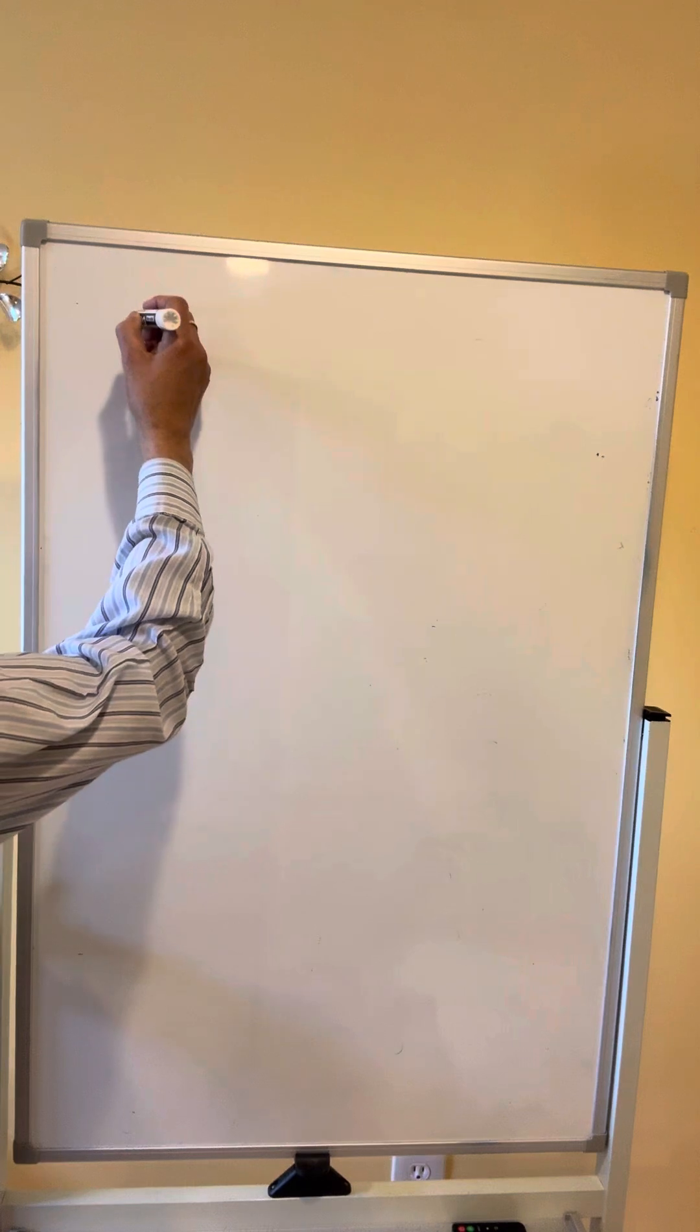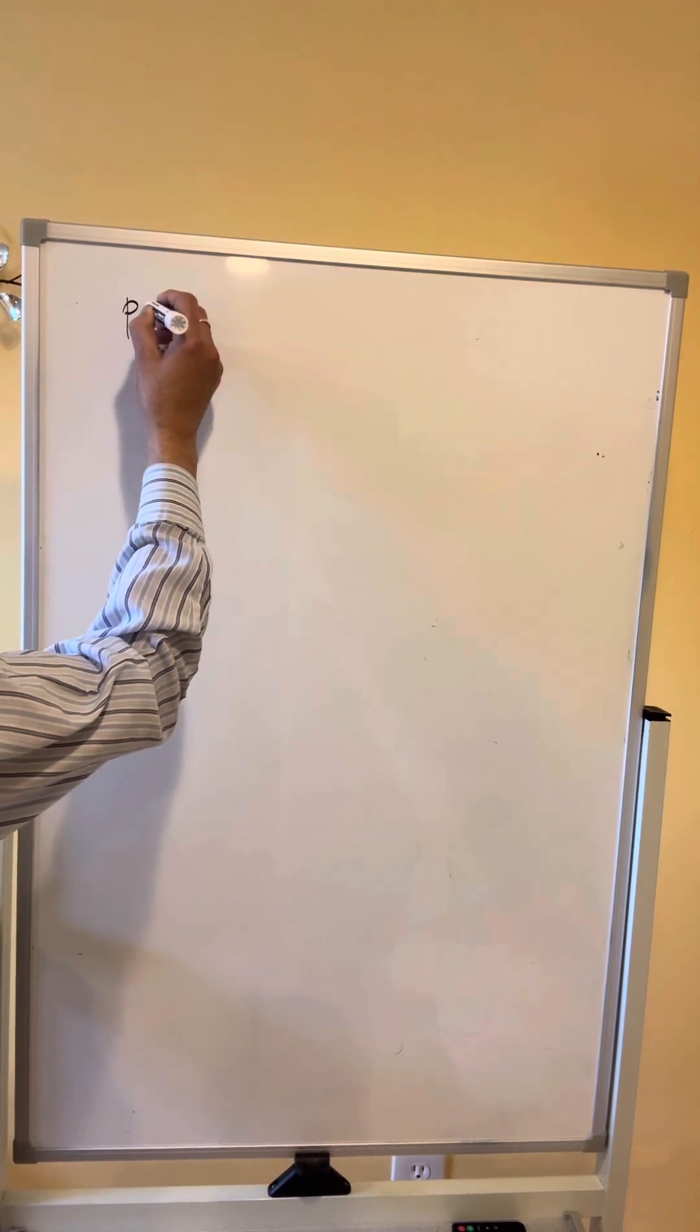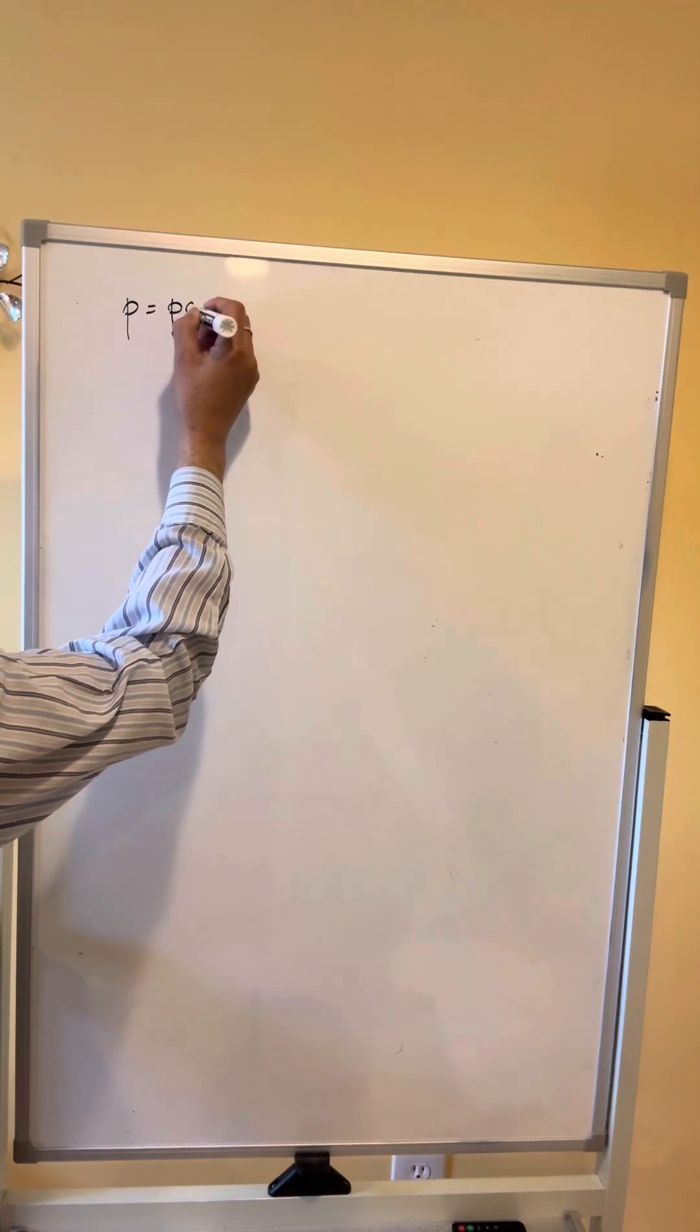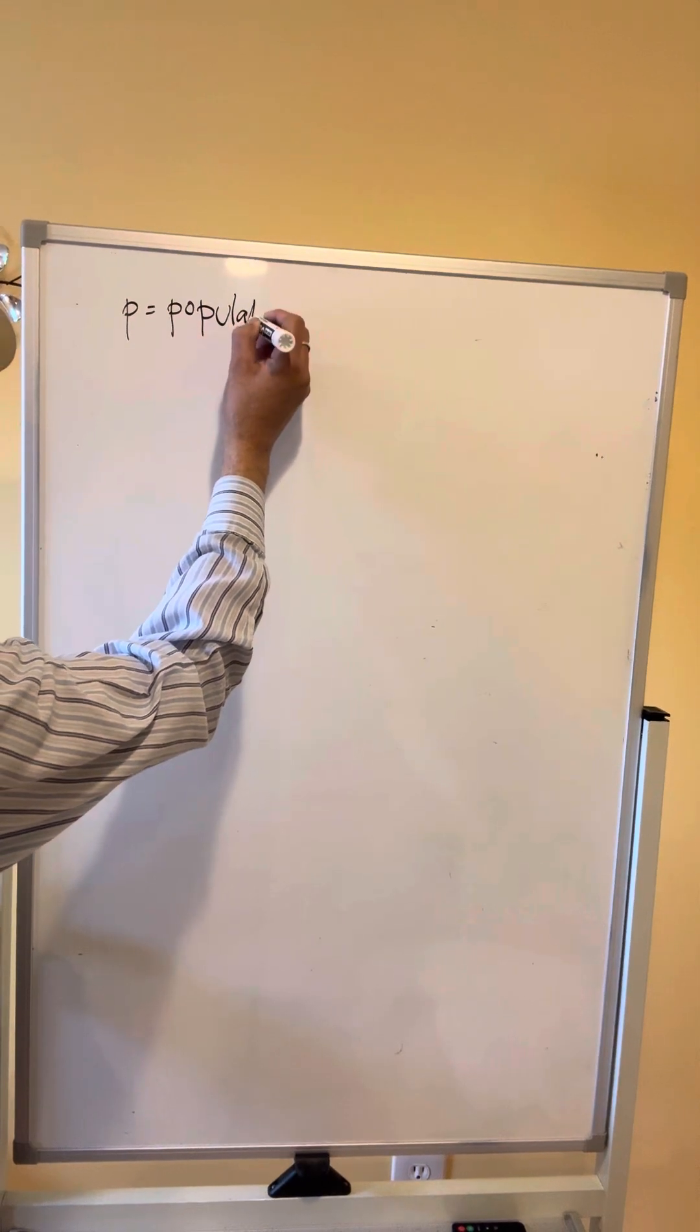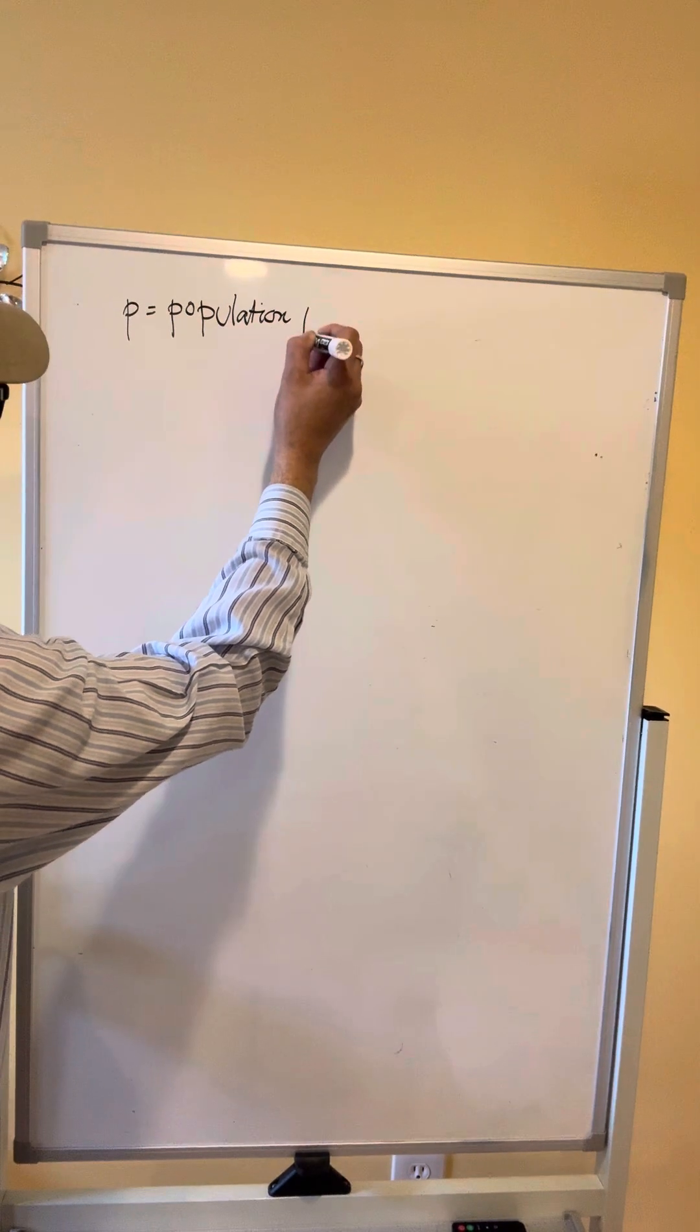At the very beginning, let me clarify. P is the population proportion of success.